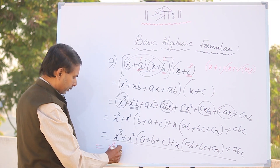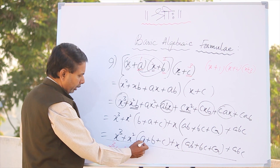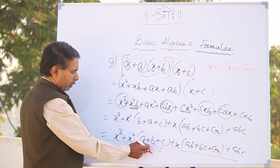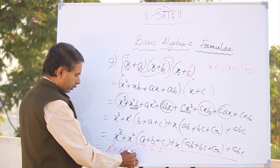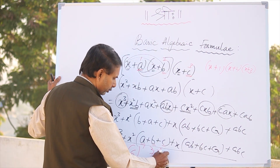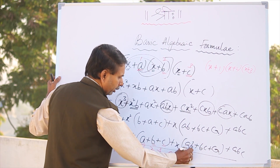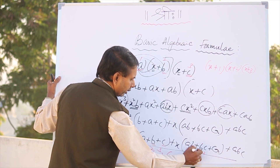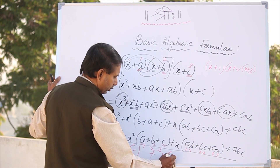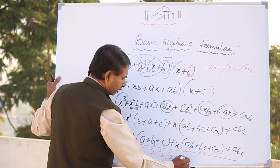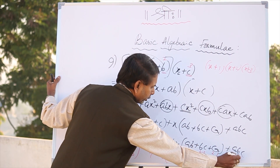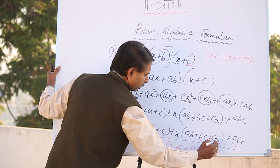X cube plus X square into 1, 2, 3 — 1 plus 2 plus 3. X cube plus 6X square plus X into 1 into 2, 2 into 3, 3 into 1 — plus 1 into 2 into 3. Come on tell me: 1 into 2 is 2, 2 into 3 is 6, 3 into 1 is 3. Plus 1 into 2 into 3 is 6.